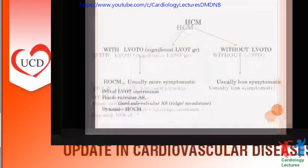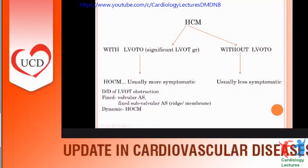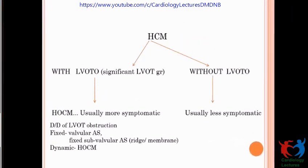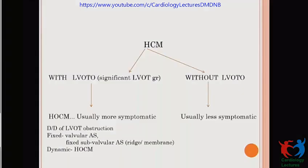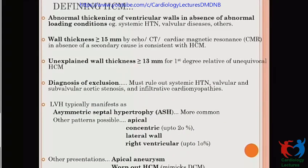Broadly classifying HCM: one form is with LVOT obstruction — a significant LVOT gradient of more than 30 mmHg at rest or more than 50 mmHg with provocation — and the other without LVOT obstruction. Though the form without LVOT obstruction is less symptomatic, LVOT obstruction is not the strongest predictor of SCD. Defining HCM: abnormal thickening of ventricular walls in absence of abnormal loading conditions, more than 15 mm by echo or cardiac MR, or more than 13 mm in a first-degree relative. We must rule out systemic hypertension, valvular and subvalvular aortic stenosis, and infiltrative cardiomyopathy.